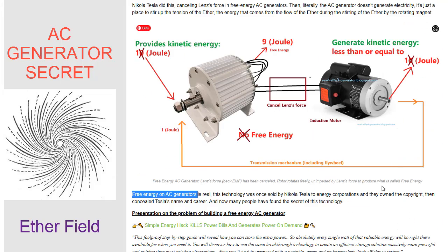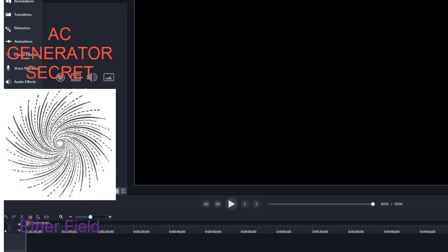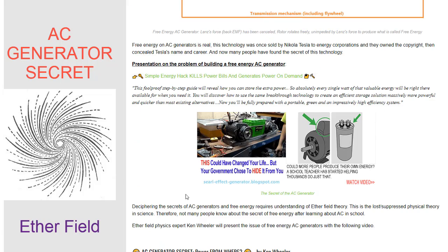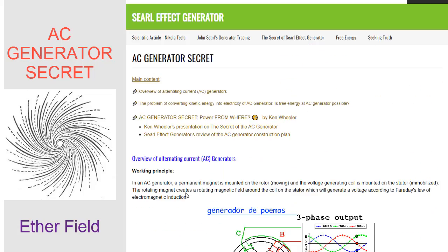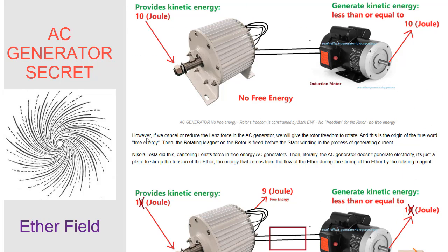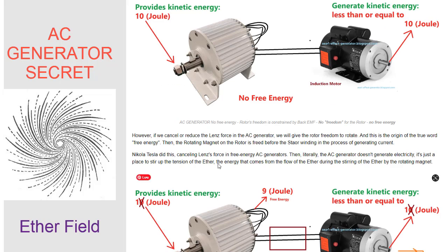The free energy is hindered by Lenz's force — that is, the force due to the back electromagnetic field, back EMF, in the process of generating electricity. Lenz's force is one of the main hindrances to free energy. It is the opposing force that acts against the motion of permanent magnets mounted on the rotor of the AC generator, making it difficult to generate free energy. One way to overcome this is to use an AC generator, designed to produce high amounts of power with little resistance. Another way is to use Tesla's technology, which uses a different process that doesn't rely on Lenz's force, making it possible to generate free energy without hindrance.